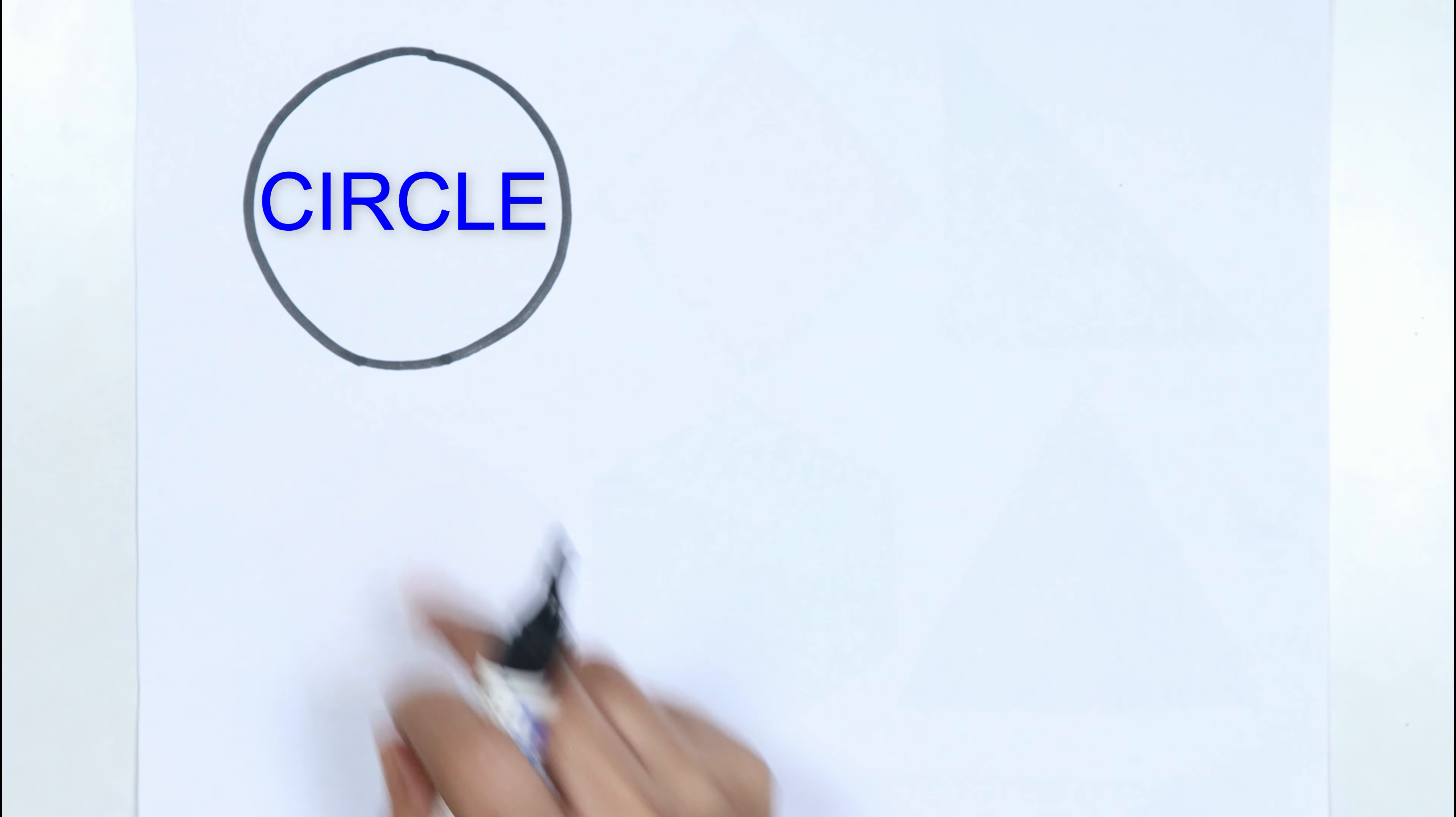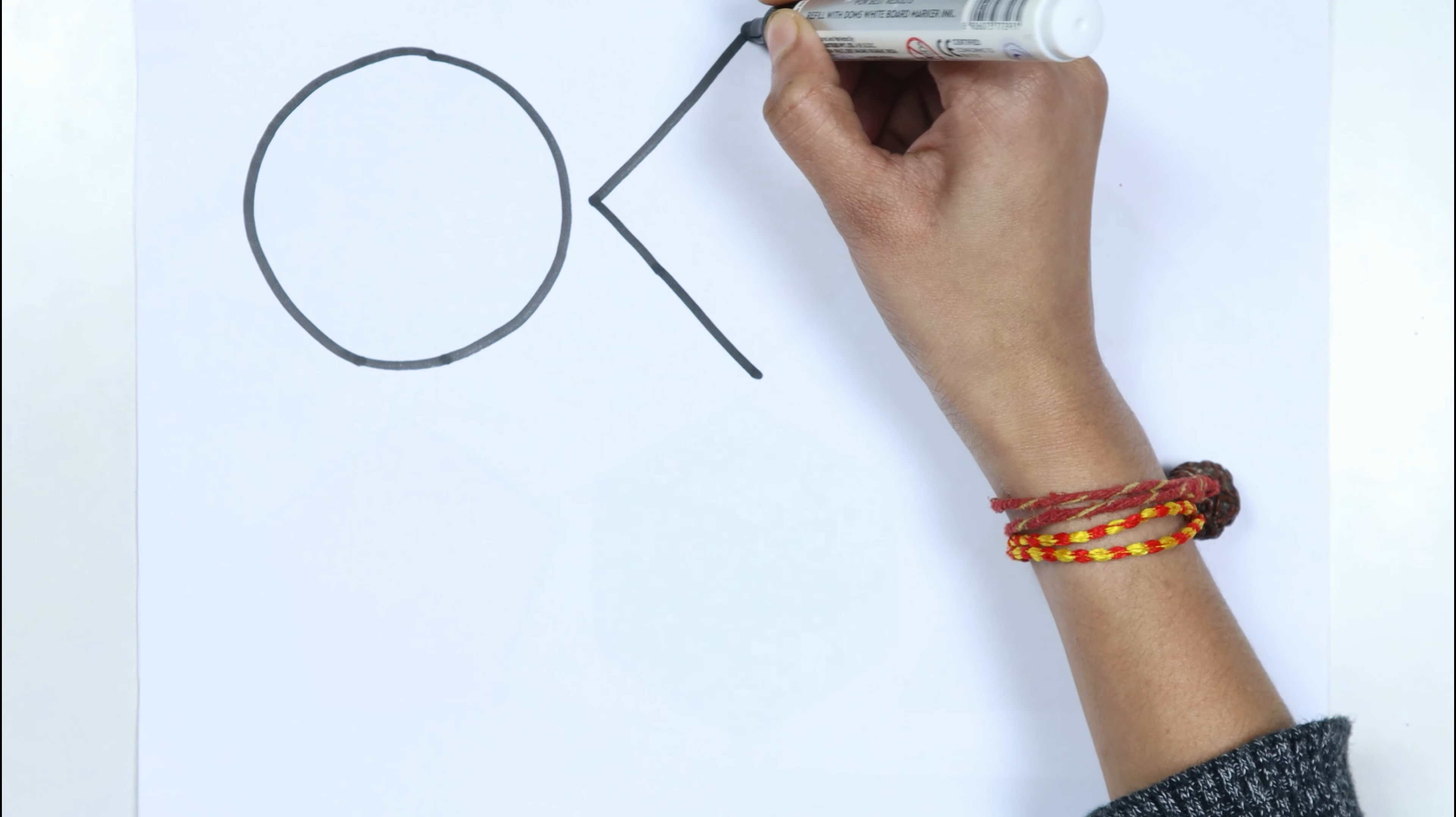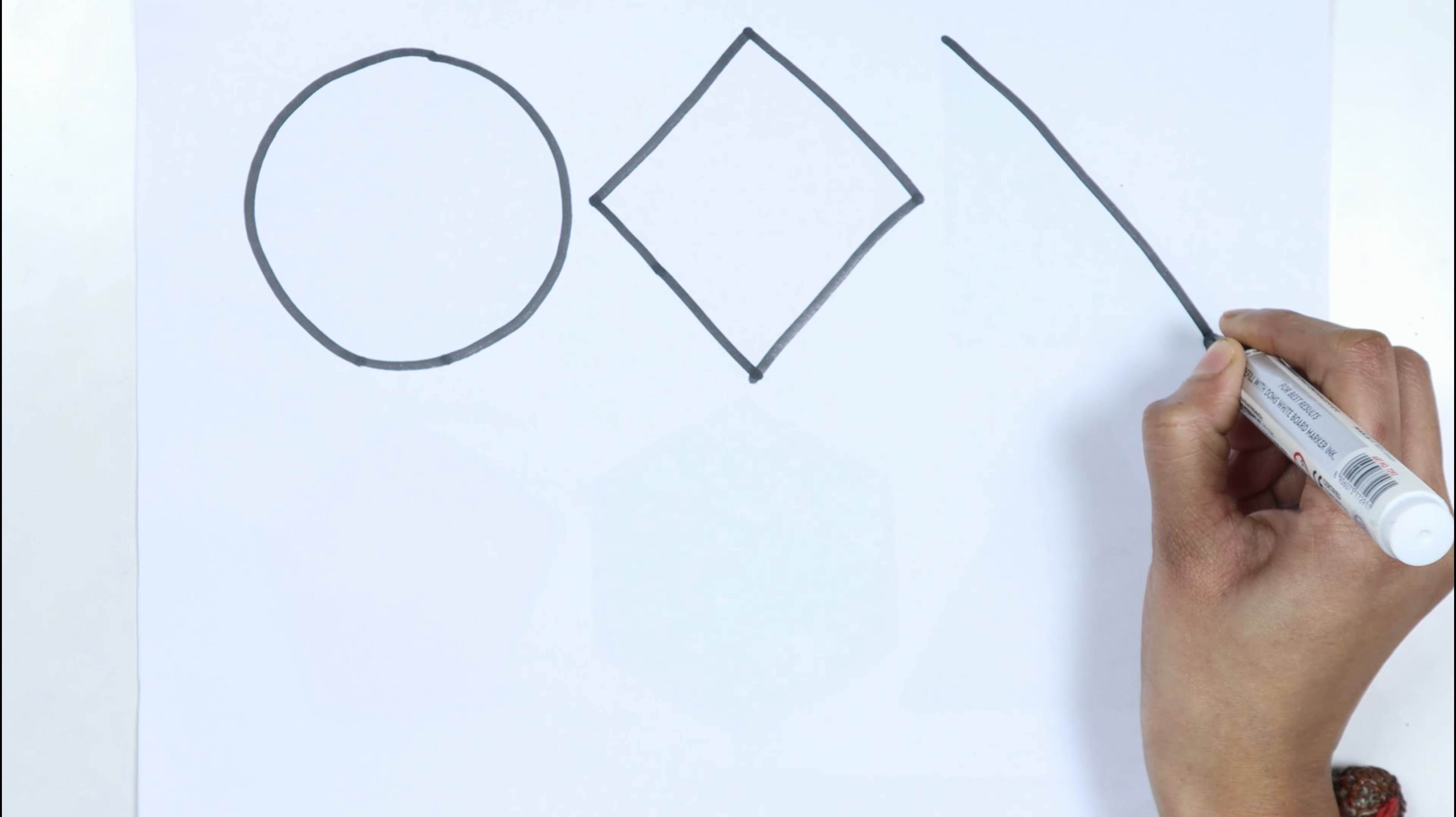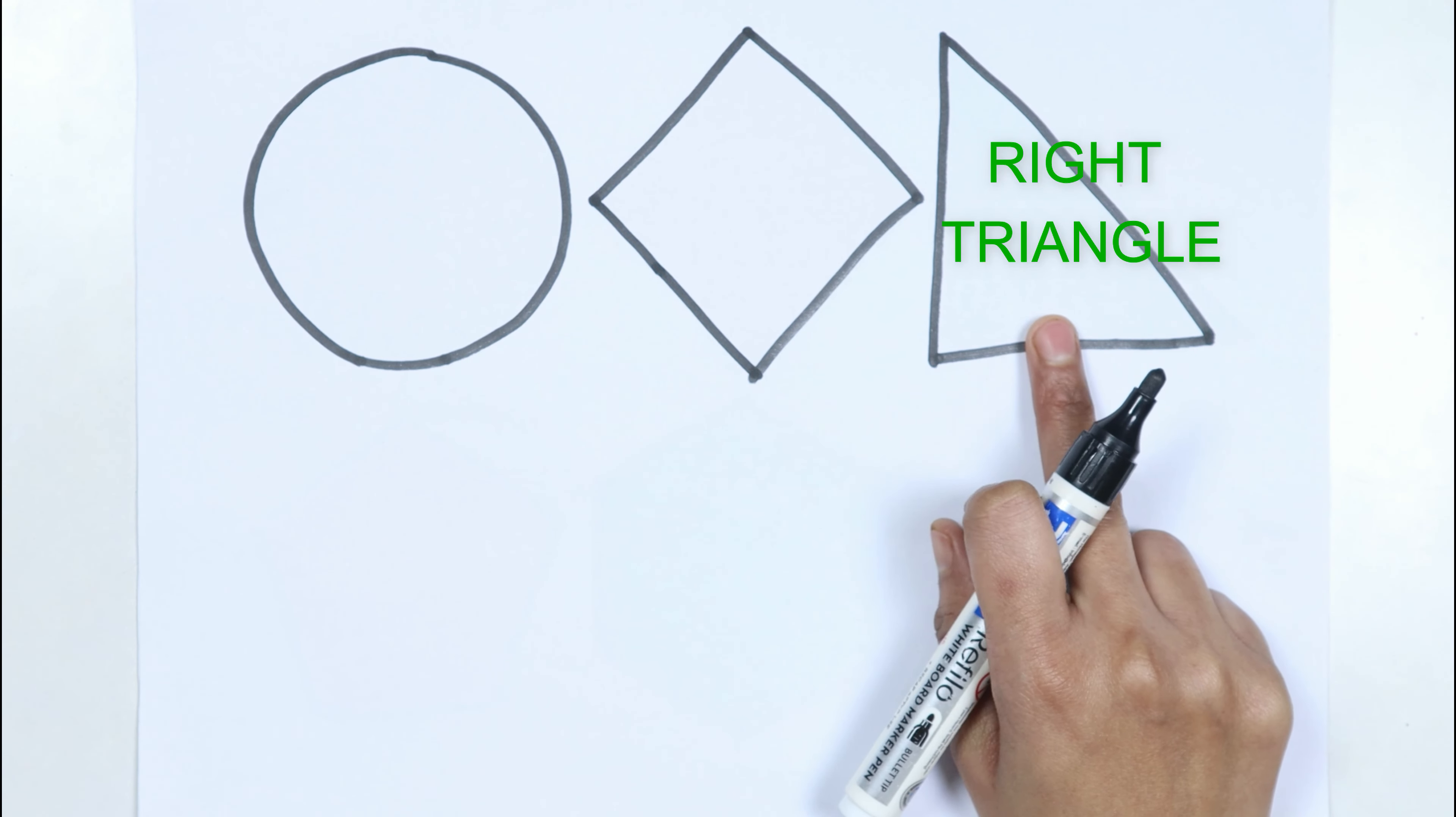Circle. Rhombus, like a diamond. Right triangle.